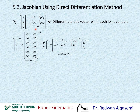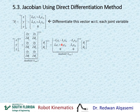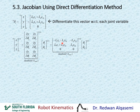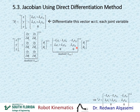We differentiate Y with respect to theta 1: we have theta 1 in both terms, giving L1·cos(theta1) and L2·cos(theta1+2). For Y with respect to theta 2: there is no theta 2 in the first term, so that is 0, and the second term differentiates to L2·cos(theta1+2). For the Z equation, partial differentiation with respect to both theta 1 and theta 2 gives zeros. So that generates our Jacobian directly in frame 0, which is our linear Jacobian.